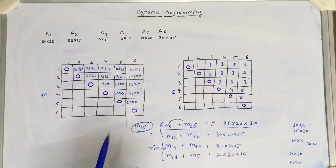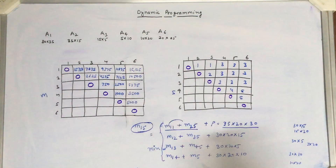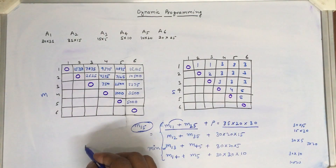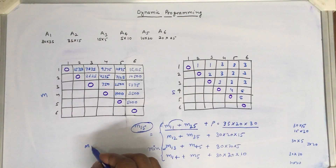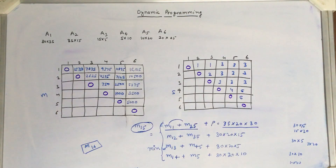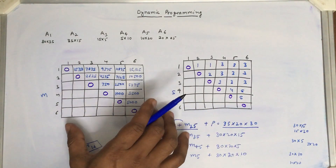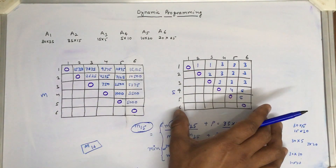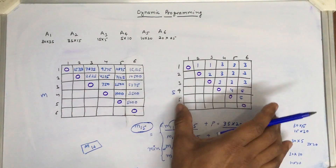Similarly, we can calculate the values for m25 and m26 — the subproblems of size 5. Then we calculate the value for m16, the complete problem. This is how we fill the matrix and the solution matrix accordingly.